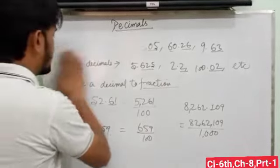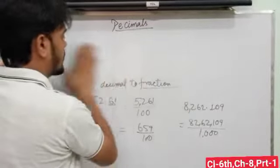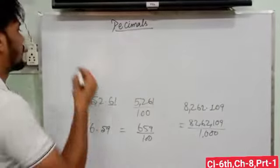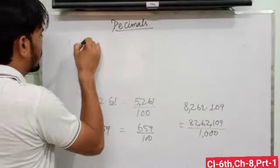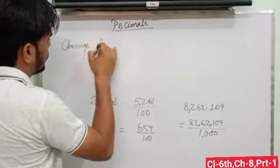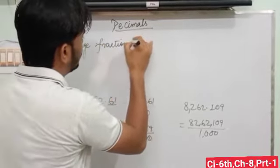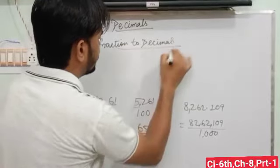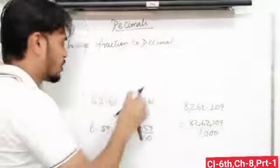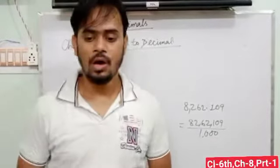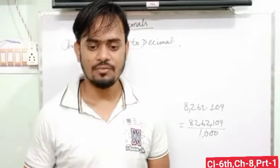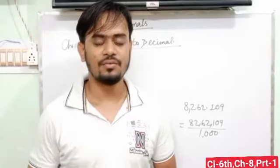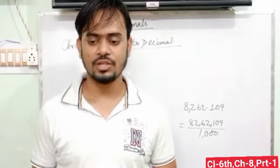Now the next step: change a fraction to a decimal. How we can change a fraction to a decimal? A fraction with a denominator as a power of 10 or its higher power can be converted to a decimal. Therefore, it is convenient to find the decimal equivalent of a fraction by converting its denominator into some power of 10.